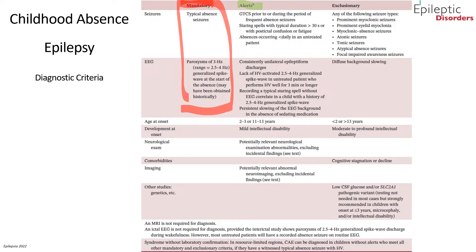Some examples of alerts for childhood absence epilepsy include staring spells with typical duration greater than 30 seconds or with post-ictal confusion or fatigue, EEG findings showing consistently unilateral epileptiform discharges, a lack of hyperventilation-activated generalized spike and wave discharges, an age of onset of 2 to 3 years or 11 to 13 years, and an abnormal neurological examination in addition to potentially relevant abnormal neuroimaging.